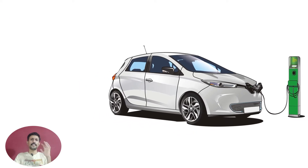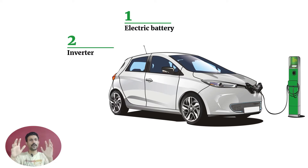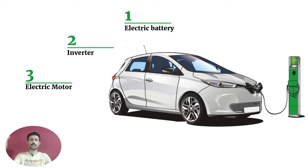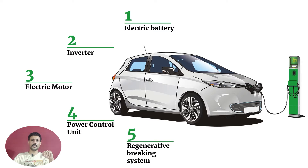There are five main components of an electrical vehicle. The first is the electric battery, which stores energy. The second is the inverter. The third is the electric motor, which converts electrical energy into mechanical energy. The fourth is the power control unit, and the fifth is regenerative braking.